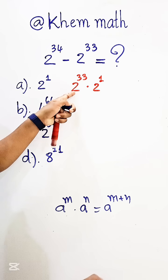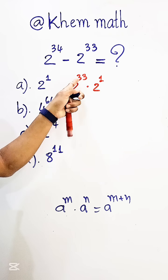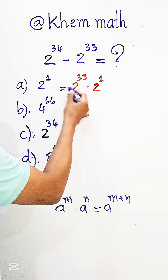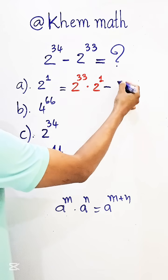So here is 2 to the power 33 times 2 to the power 1, so 33 plus 1 equals 34. Okay. Now, n is equal to 2 to the power 33.